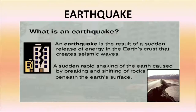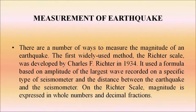Next, we discuss earthquakes. An earthquake is the result of a sudden release of energy in the earth's crust that creates seismic waves — a sudden rapid shaking of the earth caused by the breaking and shifting of rocks beneath the earth's surface. There are several ways to measure the magnitude of an earthquake. The first widely used method, the Richter scale, was developed by Charles F. Richter in 1934. It uses a formula based on the amplitude of the largest wave recorded on a seismometer and the distance between the earthquake and the seismometer.